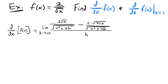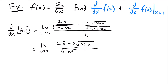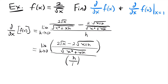Now we combine those two fractions into one: the limit as h approaches 0 of [2√x - 2√(x+h)] all over [√(x² + xh)], and this is still divided by h. To simplify this complex fraction, we multiply by (1/h) over (1/h) to eliminate the h in the denominator and get a single clean fraction.